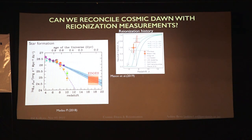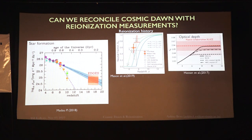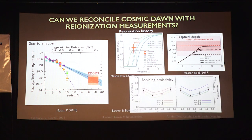Along with that, we have taken reionization history measurements — most of them below redshift 8 — giving the globally averaged neutral hydrogen fraction. We have also taken optical depth measurements, where the red dashed lines provide the Planck value of the optical depth. Additionally, we have taken ionizing emissivity measurements below redshift 5, which is the post-reionization epoch.